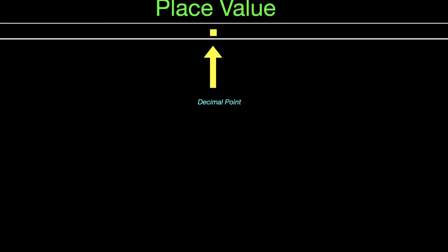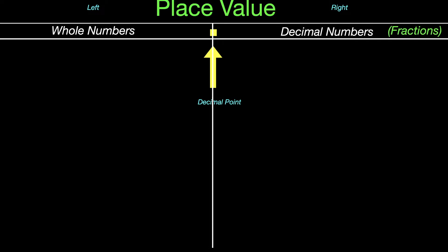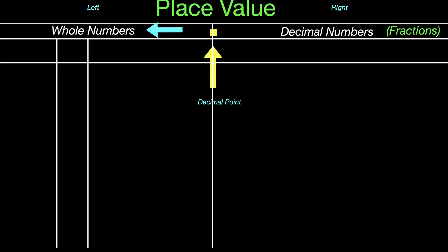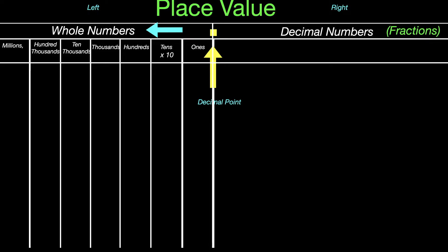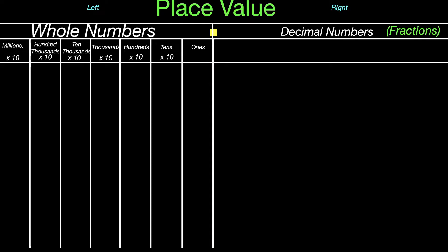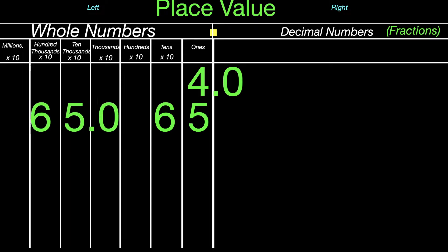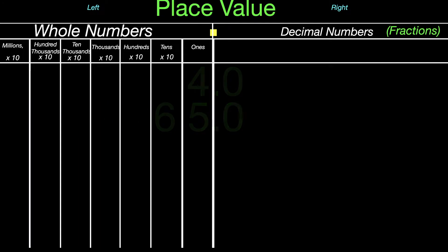The decimal point separates your whole numbers from your fractions, or in other words, your decimals. When you start with whole numbers, you have your place values — ones, tens, and it keeps going as multiples of ten, increasing by ten each time. Keep in mind that whole numbers are on the left side of the decimal point. You really could write four as 4.0, which just reads as four as well. Similarly, 65 could also be written as 65.0, so keep that in mind.